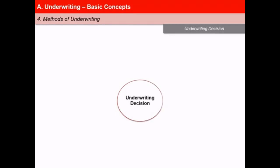Let us now consider the various kinds of decisions that underwriters may take with regard to a life proposed for underwriting. First, acceptance at ordinary rates (OR) — it is the most common decision. This rating indicates that the risk is accepted at the same rate of premium as would apply to an ordinary or standard life. In such cases, the premium is charged as per tabular rates.